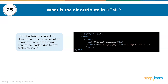The twenty-fifth question: what is the alt attribute in HTML? The alt attribute is used for displaying text in place of an image whenever the image cannot be loaded due to any technical issue. Basically, when you have a poor internet connection and are trying to load an image, you will see some text in place of the image — that text is the alt attribute.